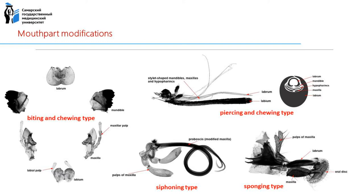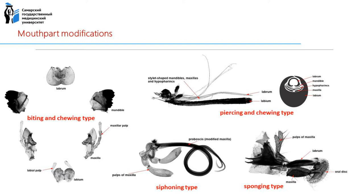Mouth part types include: siphoning type, e.g. in butterflies, forming a proboscis; biting and chewing type in beetles and cockroaches; sponging type, e.g. in flies; chewing and lapping type in honeybees; and piercing and sucking type in mosquitoes. The thorax consists of three segments.